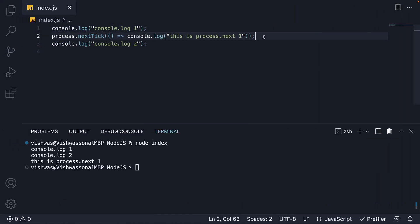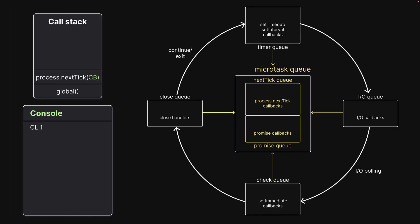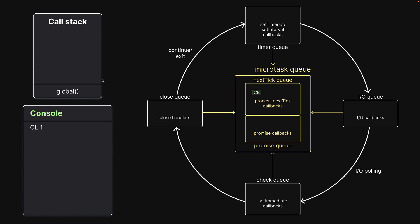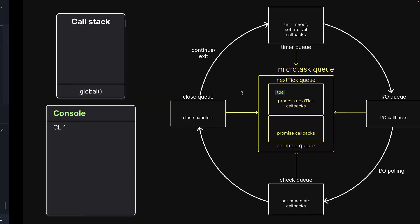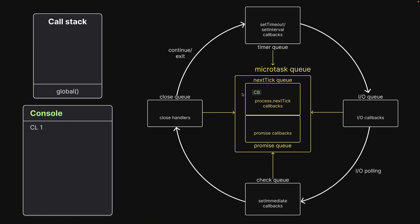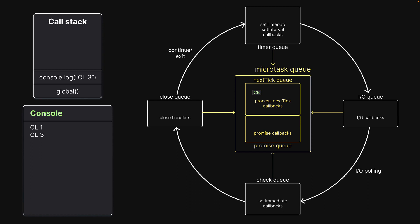Next we have process.nextTick. This gets executed on the call stack, queues up a callback function into the nextTick queue, and is popped off the stack. We still have user-written code to execute, so the callback function has to wait. Execution moves on and console.log is pushed onto the stack — the message is logged and the function is popped off.